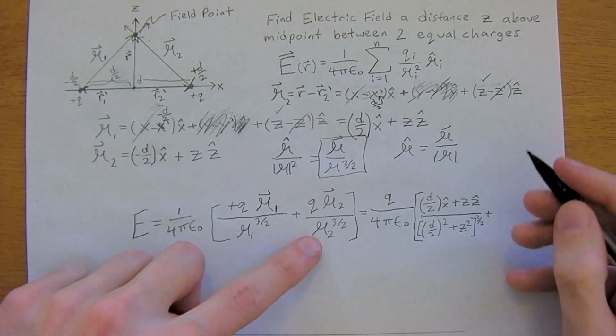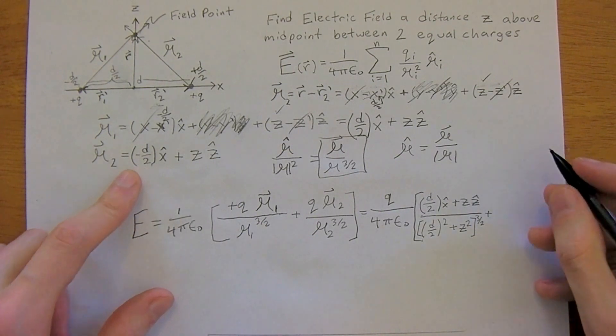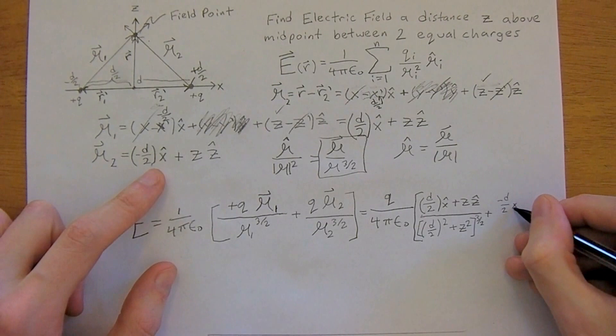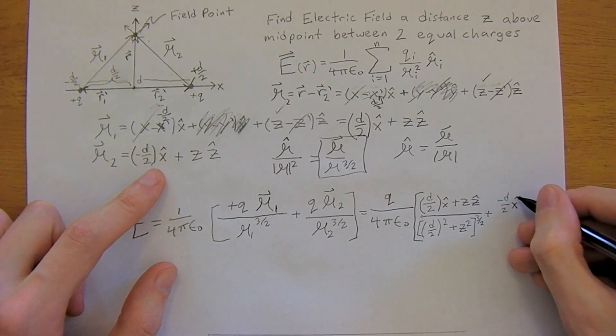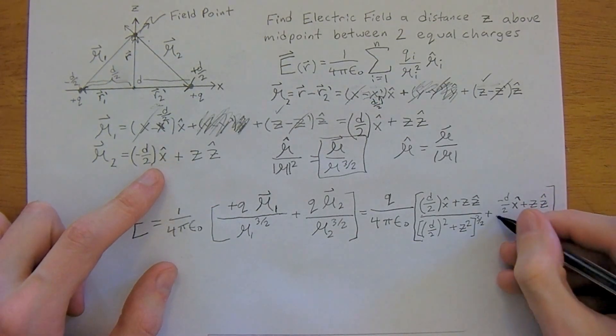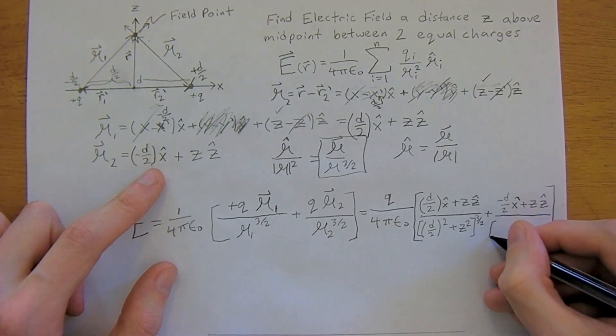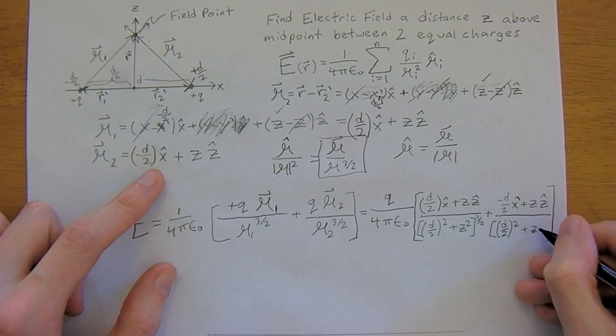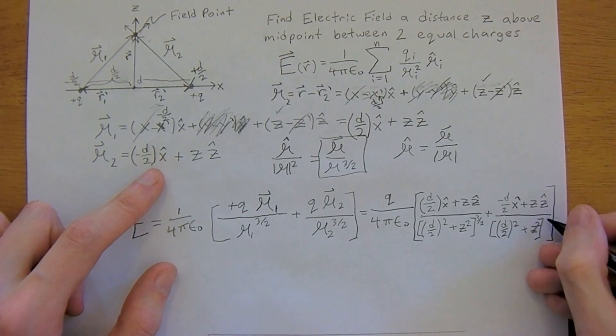And now we add it with this other r2, script r2 here. So we have negative d over 2 x hat plus z z hat. And conveniently, they have the same common denominator here. d over 2 squared plus z squared to the 3 halves power.